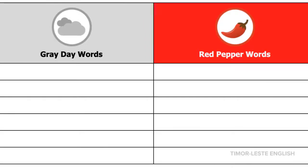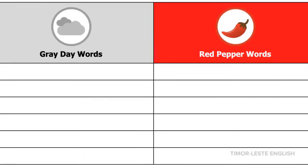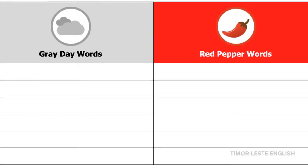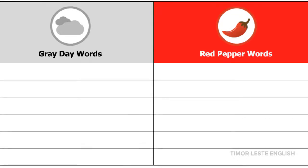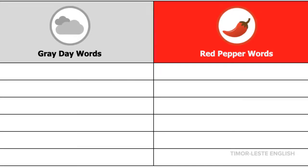Then read the words but mix them up. It's important to say the number with each word. Students can either write the word in the column for the color vowel they hear, or they can write the number. Remember, you are assessing the student's ability to hear the difference between the color vowels in each word, not the spelling of the words.